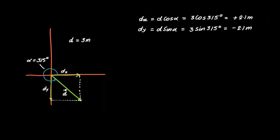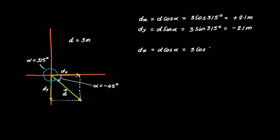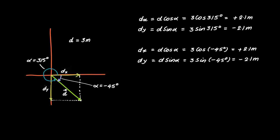Our answers for dx and dy, with their respective signs, match the expected directions. Another way to solve this would be by taking α as −45°: dx equals 3·cos(−45°) equals +2.1 m, and dy equals 3·sin(−45°) equals −2.1 m — the same answers. So +315° and −45° are equivalent. Remember: anticlockwise angles are positive and clockwise angles are negative. Do not make the mistake of taking α as +45°.